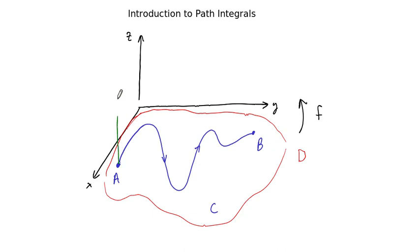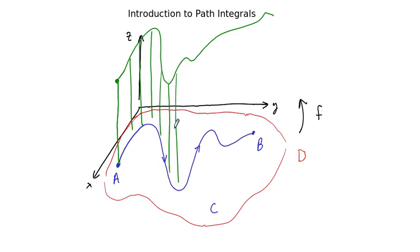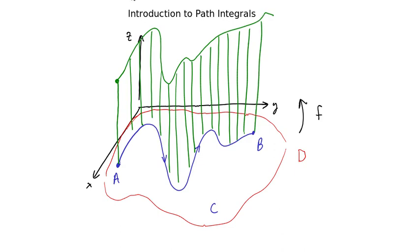So maybe above A, maybe the point that's assigned by F has this height here. And as we move along, the idea is that if you follow the function, you will see that the curve, above the curve, there will be traced out a surface here.